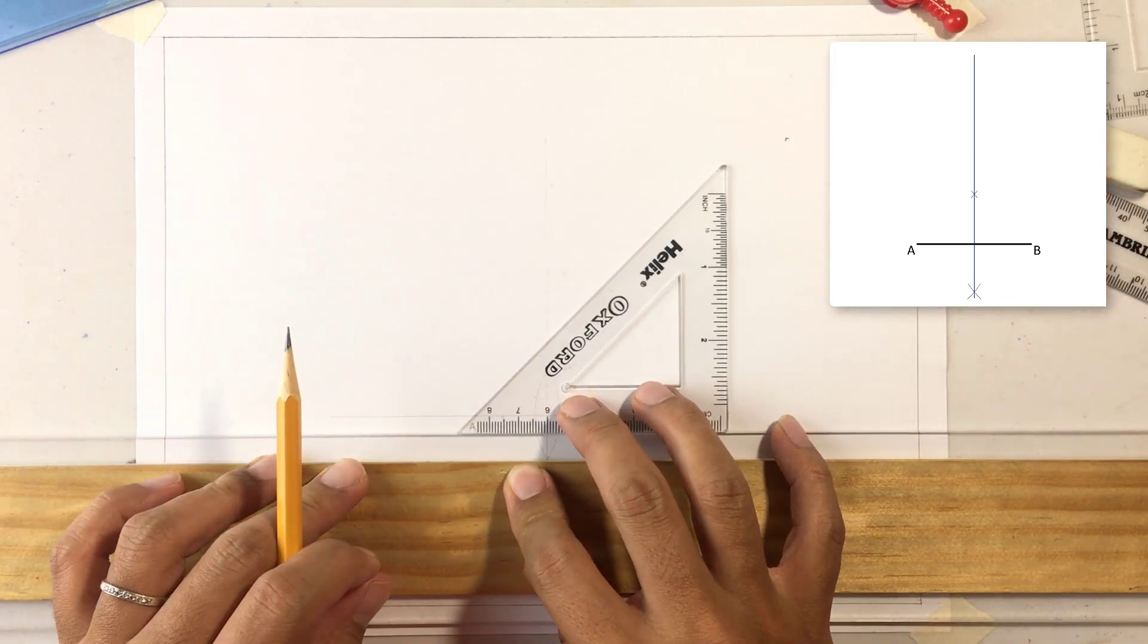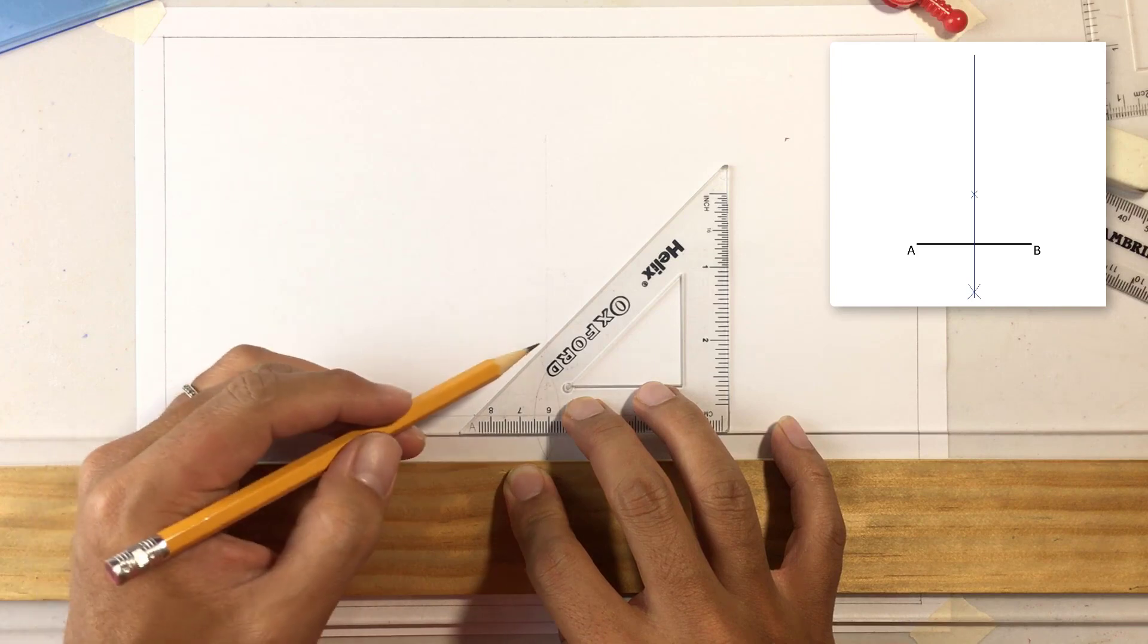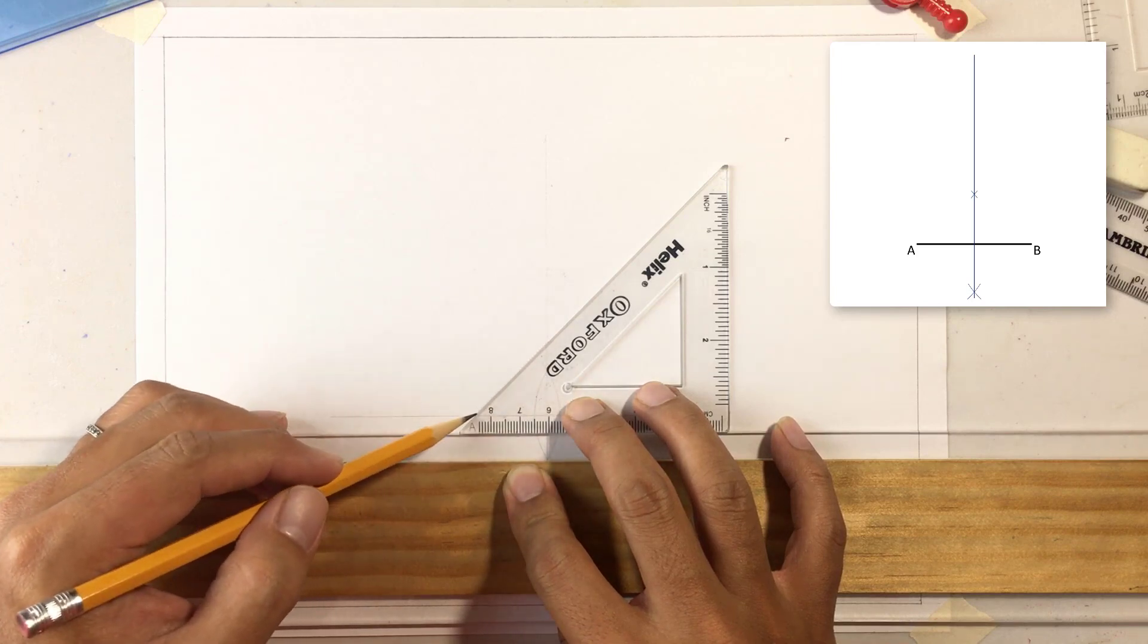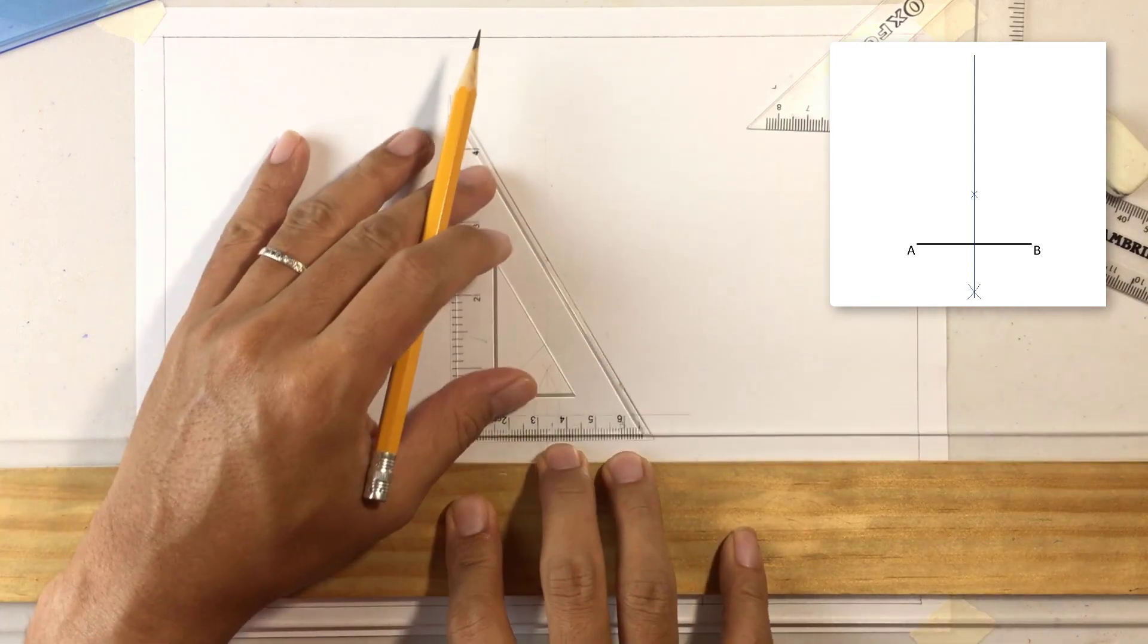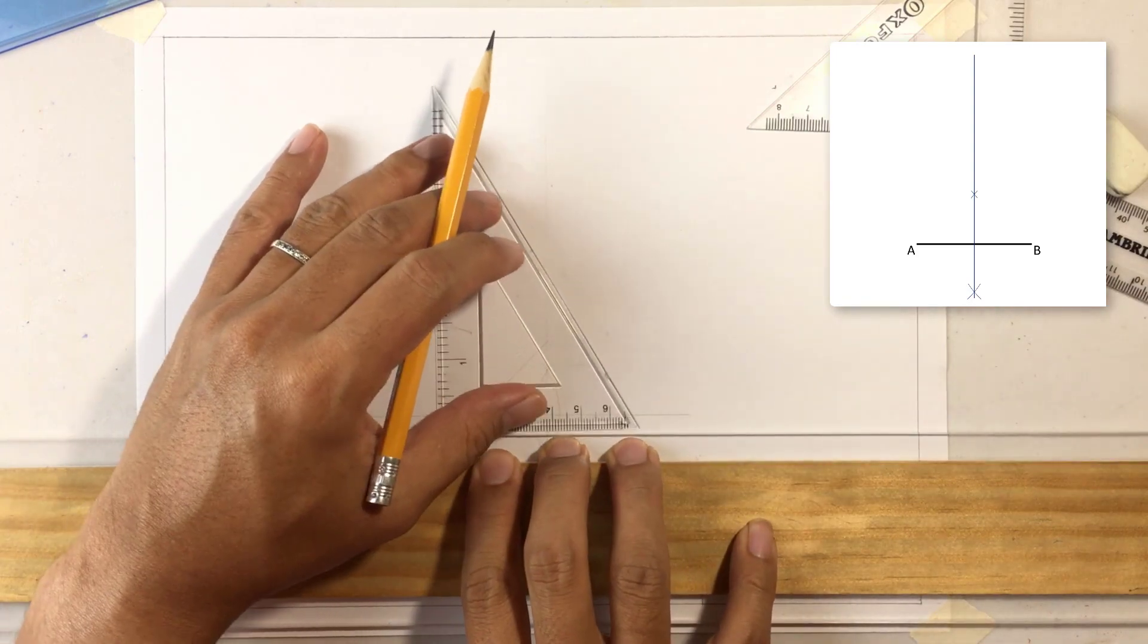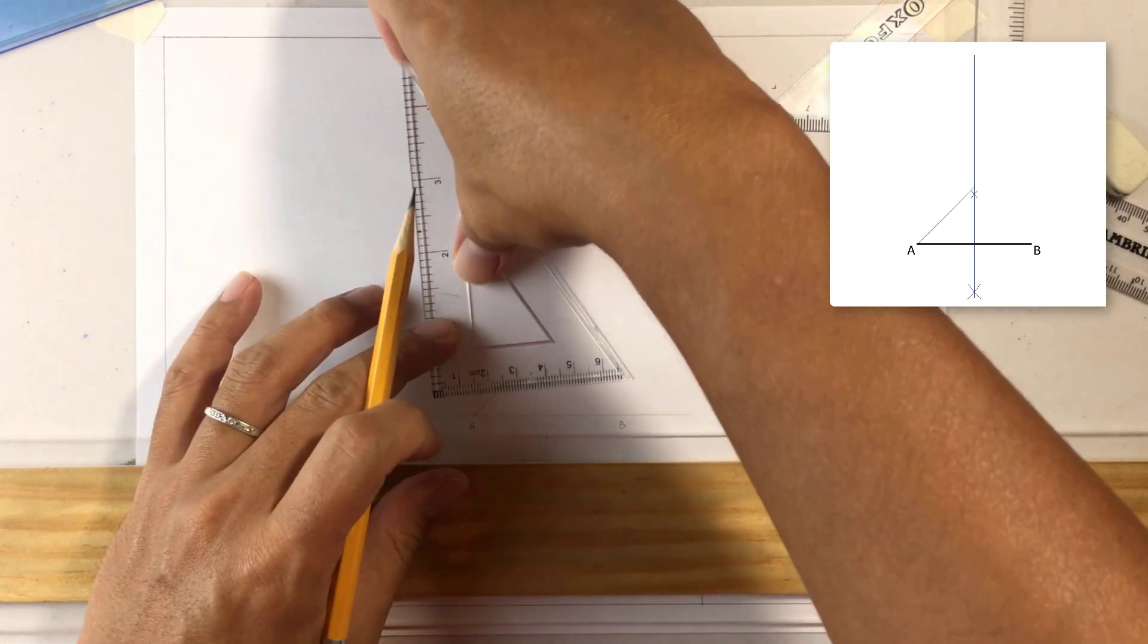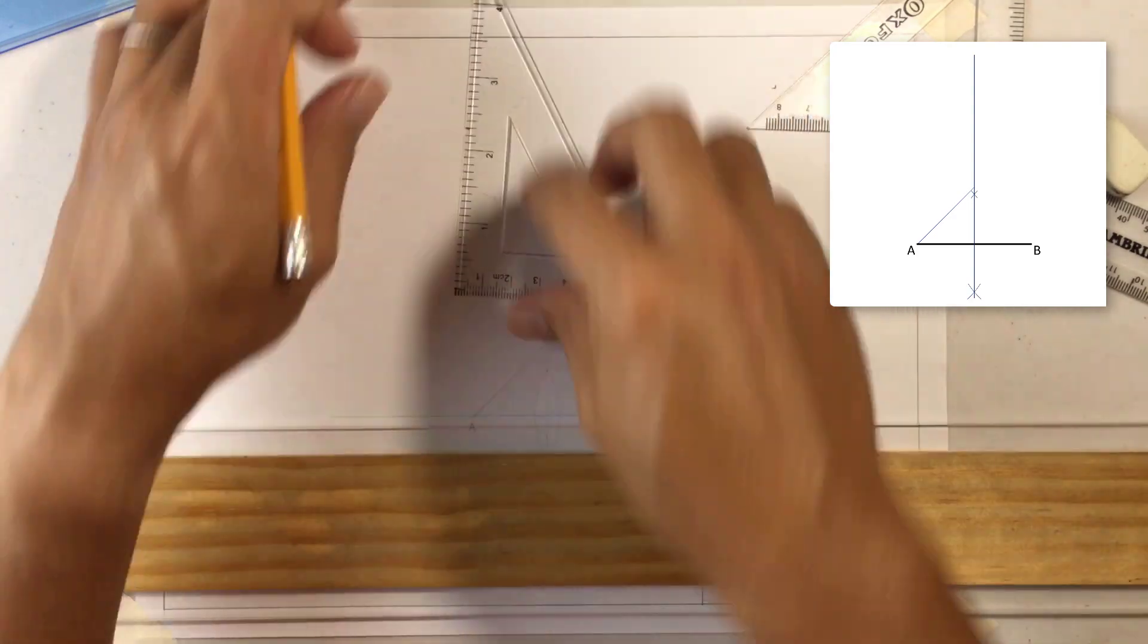Right after you have your bisector, use your 45 degree triangle on A. Make sure you line it up to point A and then you draw your 45 degree line, making sure that it intersects your bisector.